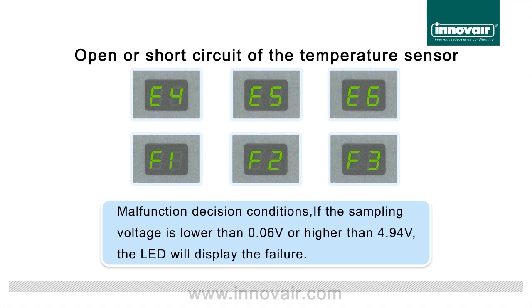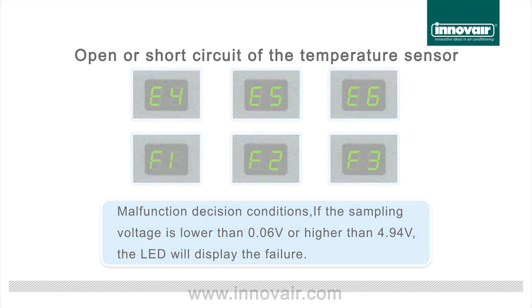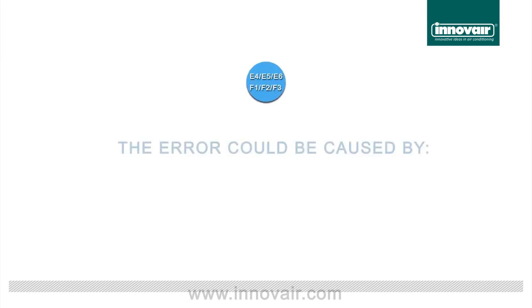Malfunction decision conditions: if the sampling voltage is lower than 0.06 volts or higher than 4.94 volts, the LED will display the failure.